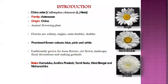The botanical name of China Aster is Callistephus chinensis, family is Asteraceae. It is originated from China and it belongs to the annual flowering plant. Annual means annual seasonals, which complete their life cycle in one season or one year. The flowers are solitary — singles, semi-doubles, doubles.